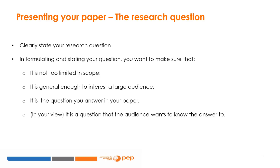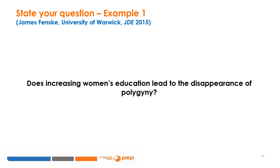Here are a few examples. The first is by James Fenske, a professor of development economics at the University of Warwick, whose article was published in the Journal of Development Economics in 2015: does increasing women's education lead to the disappearance of polygyny? Fenske answers this question using data from several sub-Saharan African countries. Gender issues, of which polygyny is a significant contributor, are a salient feature of nearly all countries. Both polygyny and women's education are crucial issues in the developing world, particularly in sub-Saharan Africa, to the point where the UN turned improving women's educational outcomes (SDG 4) and eliminating all forms of discrimination against women (SDG 5) into sustainable development goals.